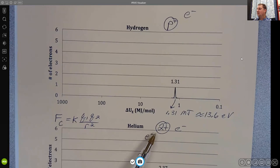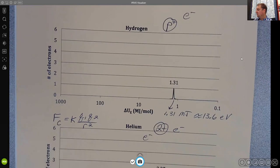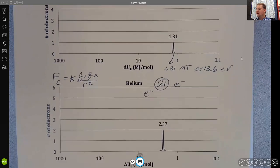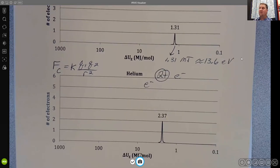In the case of helium, we've doubled the charge, so we should have a higher force, which means it should be harder to remove the electrons from the atom. In our photoelectron spectra for helium, we see that we've gone from 1.31 to 2.37, and we see that we now have two electrons here, and those two electrons take the same amount of energy to remove from the atom.